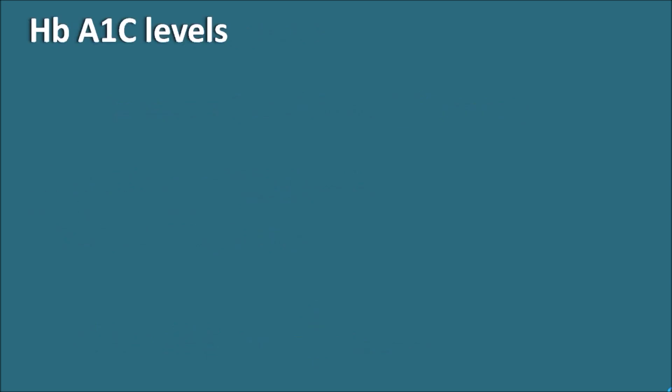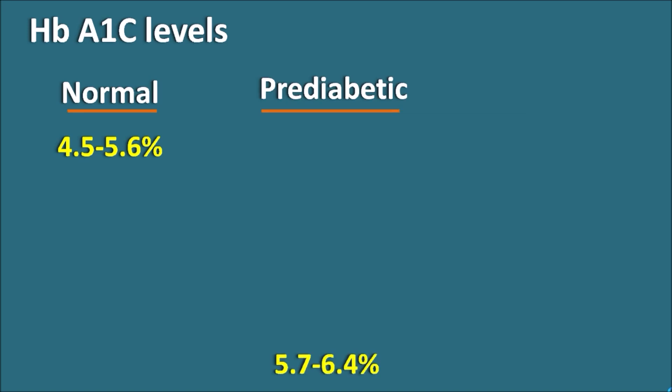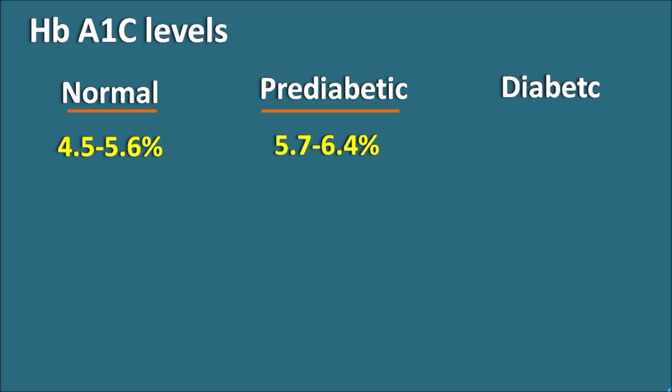What are the HbA1c levels? They can be classified as normal level, pre-diabetic, and diabetic levels. The normal level is from 4.5 to 5.6 percent. Pre-diabetic levels include 5.7 to 6.4 percent. When the patient is having HbA1c levels within 5.7 to 6.4, they may have a chance to be diabetic in the future, and if any risk factors are associated, there is a risk for the generation of diabetes in the near future.